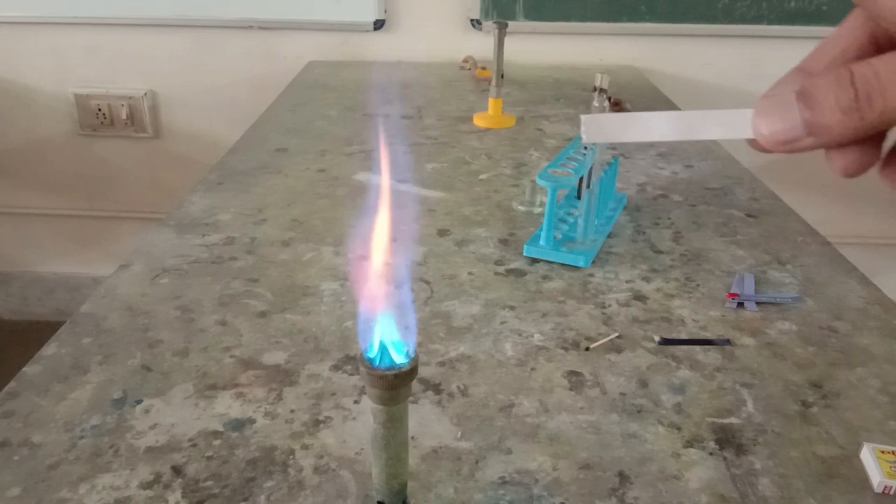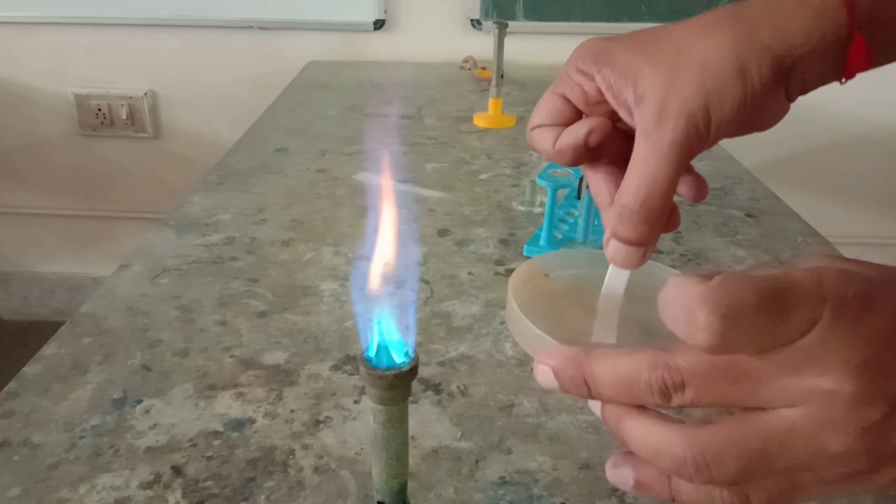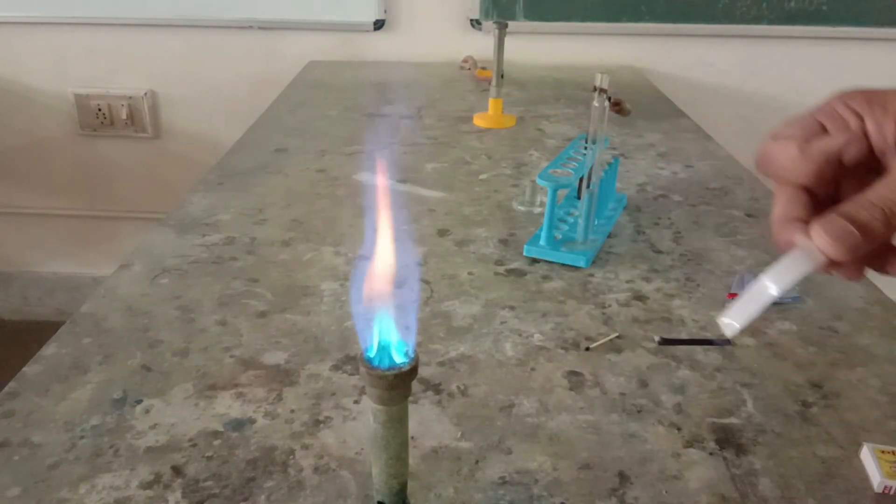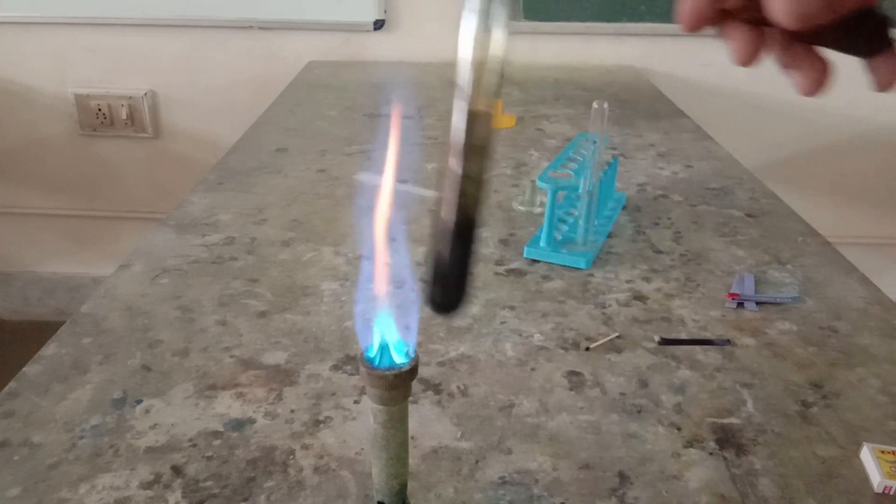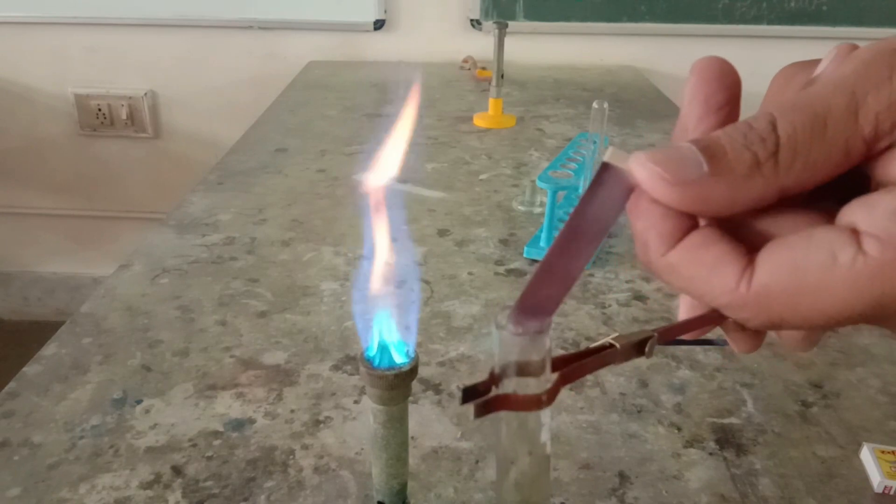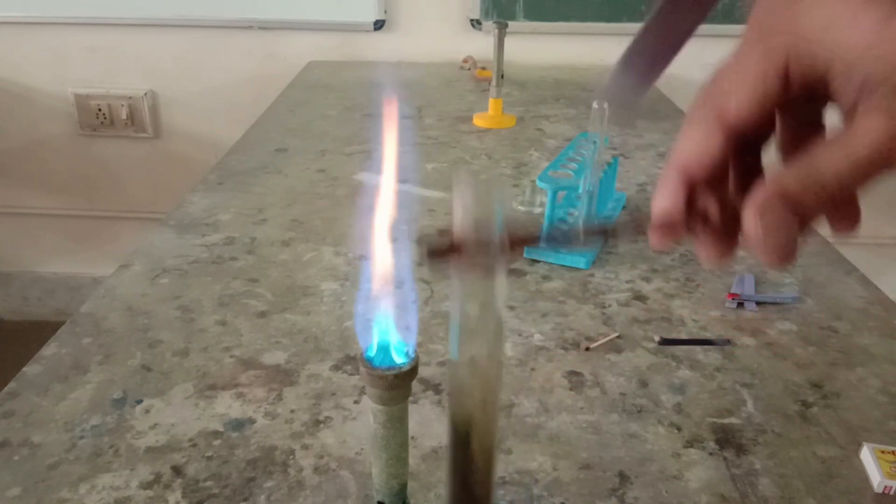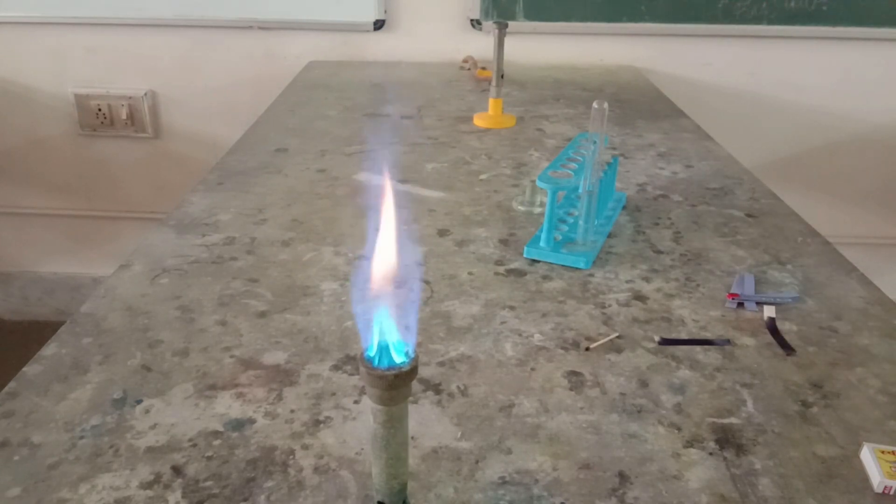This is a white colored starch iodide paper. I'm going to gently dip it into the distilled water and put it over the mouth of the test tube. Now chlorine gas immediately converts this starch iodide paper black in color. This is the confirmatory test for chlorine gas.